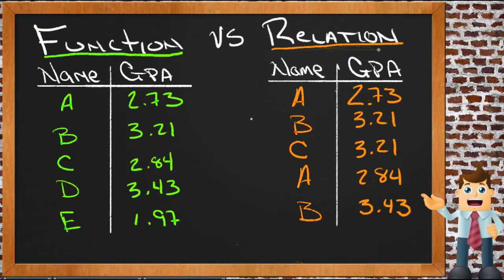If we look at this relation over here on the right, if we look at this side first, what I've done here is relate a bunch of students to their GPAs. We'll just assume that the letter represents their last name. So we have a student whose last name starts with A and their GPA is 2.73, and another student whose last name starts with B and that GPA is 3.21.